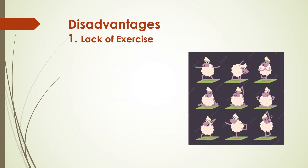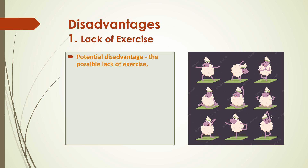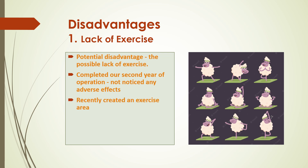There are not as many disadvantages as there are advantages of the DeCampo model of sheep production. One disadvantage — or potential disadvantage — is a lack of exercise. I refer to this as a potential disadvantage since we have now almost completed our second year of operation and have not noticed any adverse effects on any of our sheep. We are aware of this potential problem and have recently added an exercise area where our sheep can be exercised for a couple of hours two to three times a week.